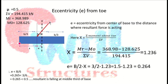To check whether the resultant falls in the middle third, we calculate eccentricity e, which should be less than B/6. The position x̄ = (ΣM about toe) / ΣV = (resisting moment − overturning moment) / ΣV. The x̄ value is 1.236 meters. Eccentricity e = B/2 − x̄ = 1.5 − 1.236 = 0.264 m. Since B/6 = 3/6 = 0.5 m and e = 0.264 < 0.5, the resultant falls within the middle third of the base slab.